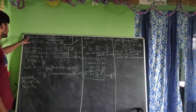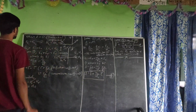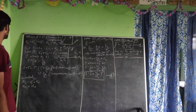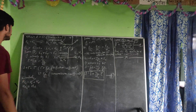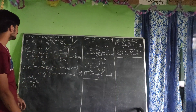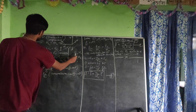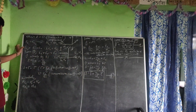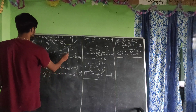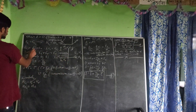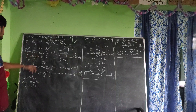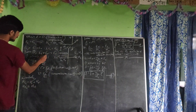At boundary condition z equals zero, the tangential components must satisfy: E_T1 equals E_T2 and H_T1 equals H_T2, where E_T1 is the total electric component at medium one and E_T2 is the total electric component at medium two. Similarly, H_T1 is the total magnetic component at medium one and H_T2 is the total magnetic component at medium two. Therefore, E_T1 equals E_i plus E_r, since both the incident and reflected waves are in medium one, and E_T2 equals E_t, the transmitted wave.